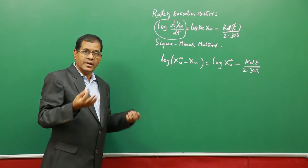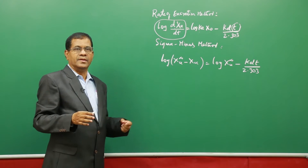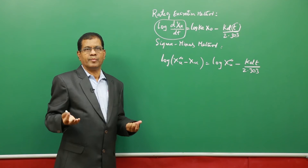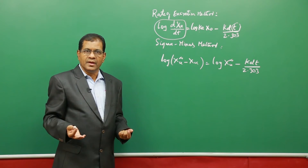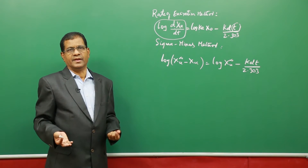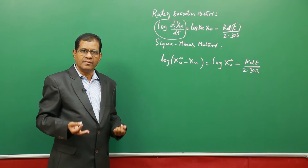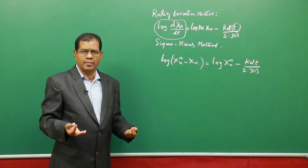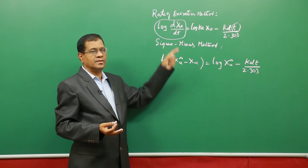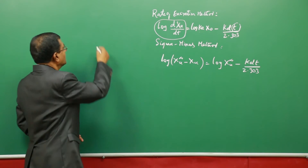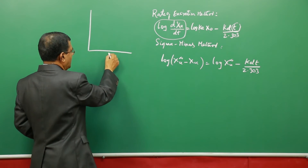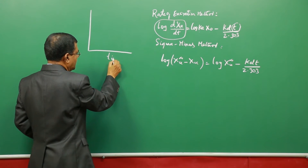The reason you must take the logarithm is that the excretion rate, just like the elimination rate, is directly proportional to the concentration. Hence the excretion process obeys first-order kinetics. In first-order kinetics, the variable is always a log variable, so you always take the log function — making this a standard y = mx + c linear regression.